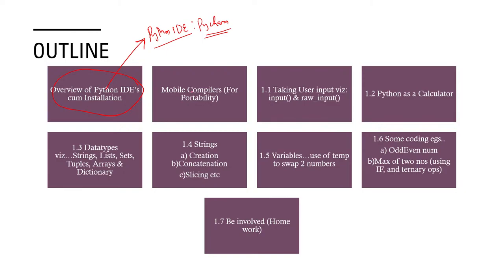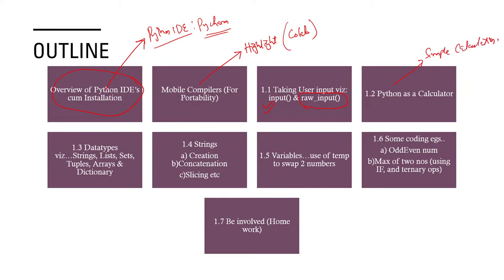Something that struck me while discussing with a colleague: she pointed out that many students don't have PCs, so it would be better to highlight alternatives. Today we'll be looking into that, paying closer attention to Google Colab. You can actually run your program on the fly from anywhere. I'll also briefly cover raw input versus input, and why input is preferred, then we'll do simple calculations using Python as a calculator — just arithmetic operations.